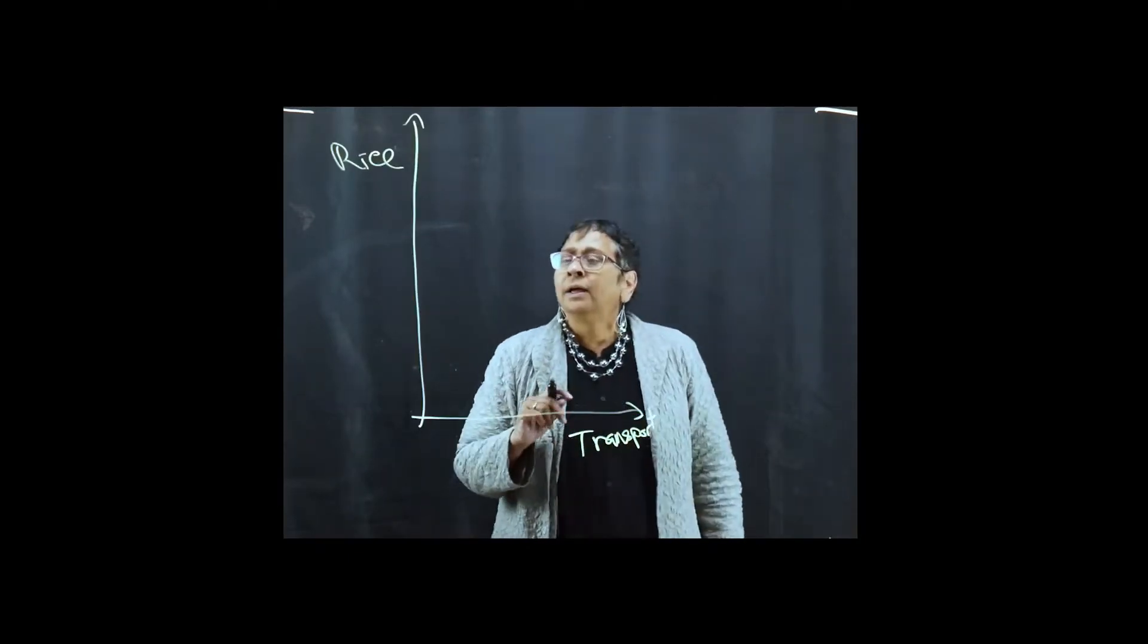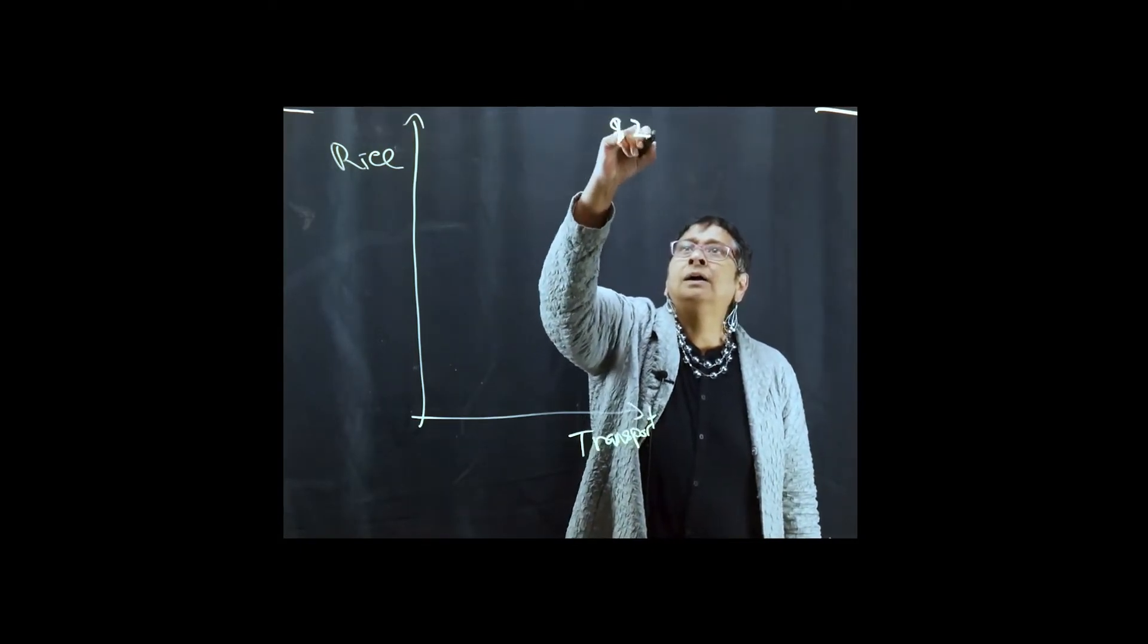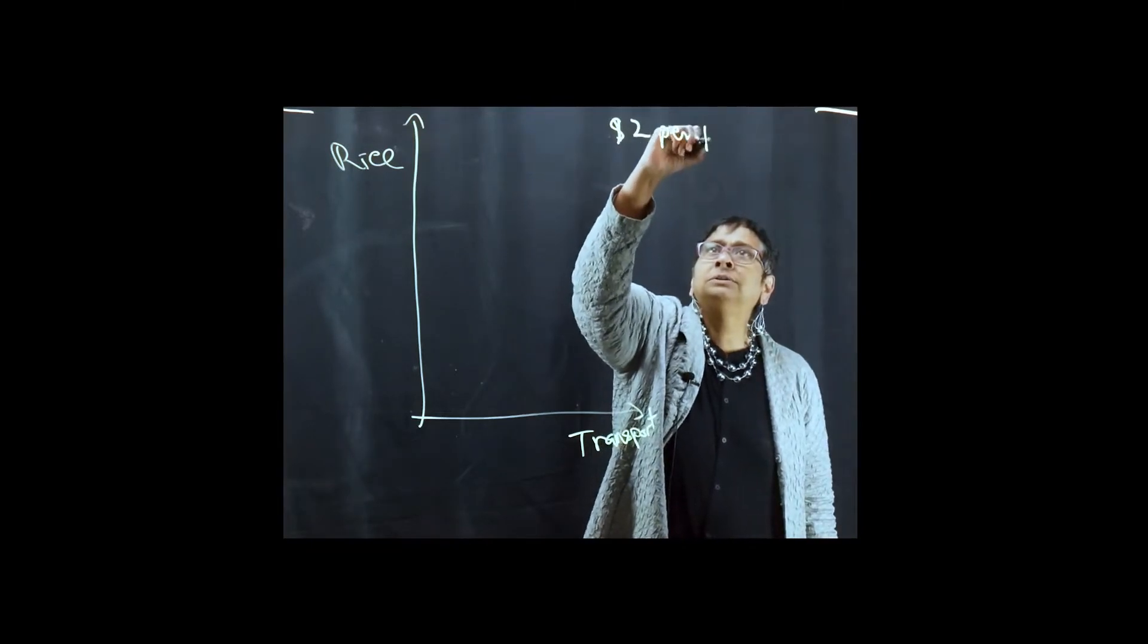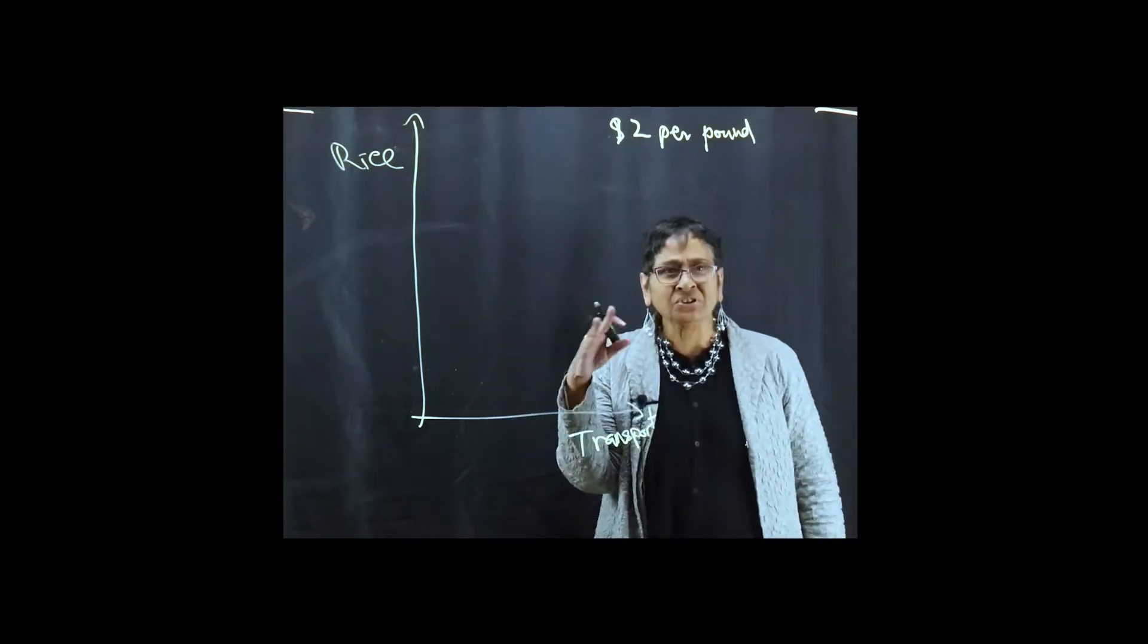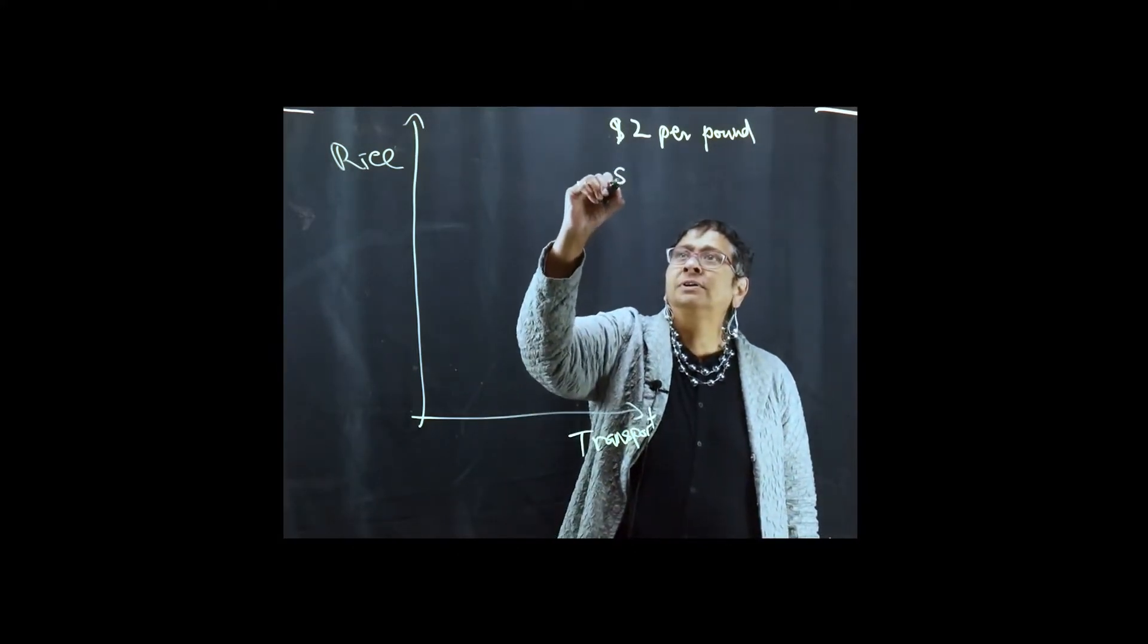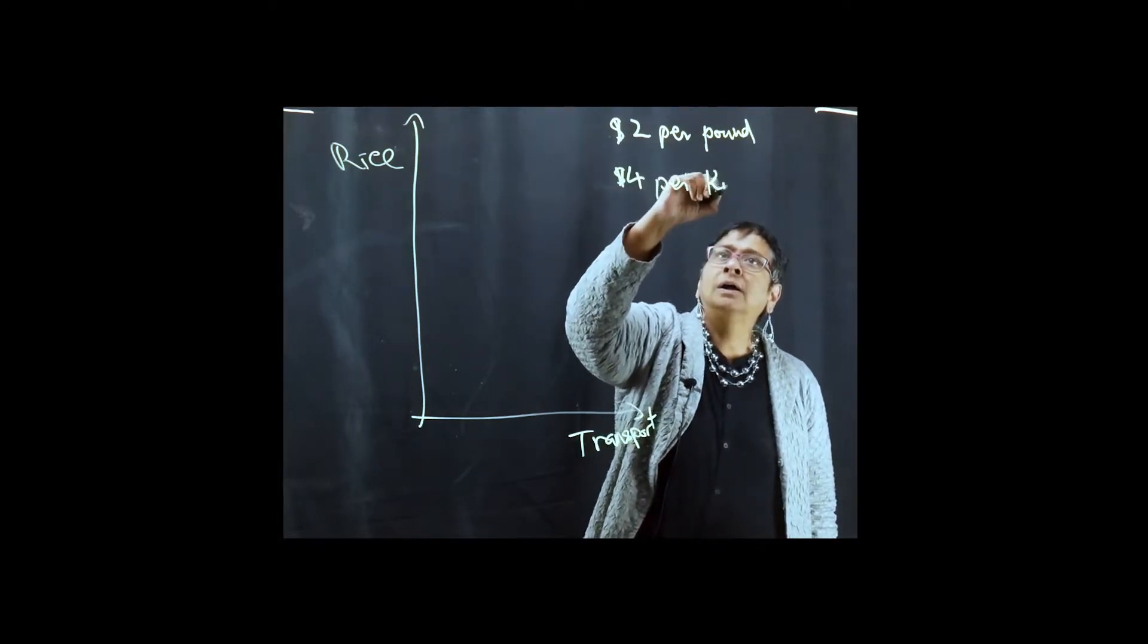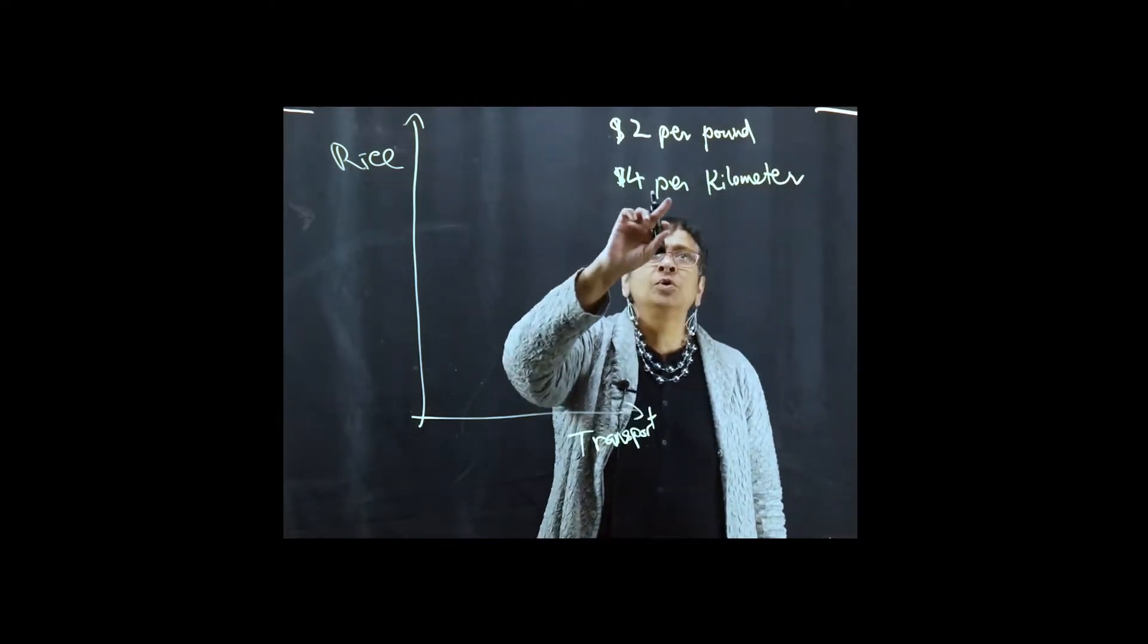Let's say you have a choice between rice and transport. And let's say that, per pound, rice was $2 a pound, these are all made up numbers, I haven't checked them. And transport was 4 per kilometer.